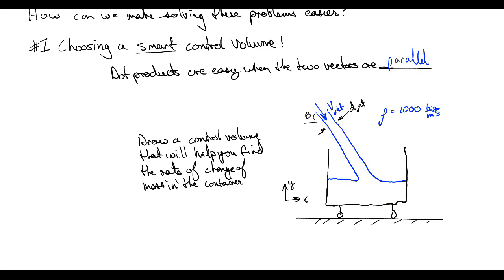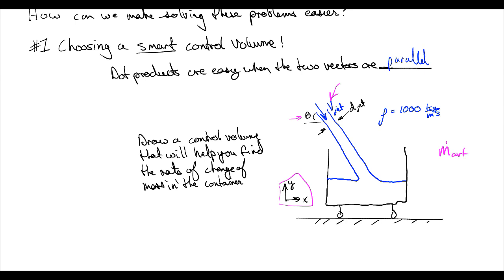So let's look at this problem, which we probably will give you at some point. We have a fluid jet entering a cart with a velocity V-jet, a diameter of D-jet, entering at an angle theta. Here's our coordinate system, X and Y. It's on wheels. And maybe I want to know what the rate of change of mass is within the system, within the cart — M-dot-cart. If we want to make this simple in terms of the dot product, there are lots of things we could do for drawing a control volume. And you will always draw a control volume.